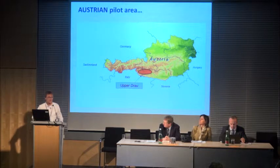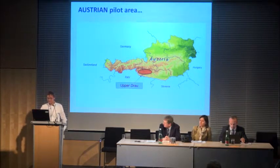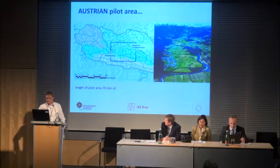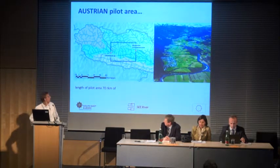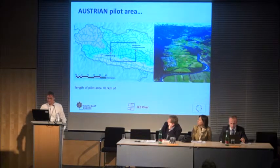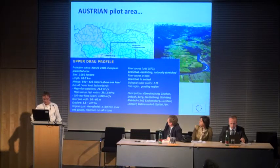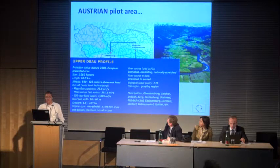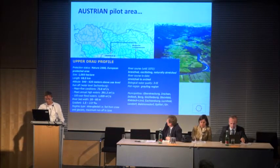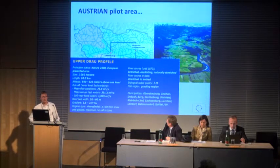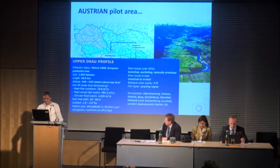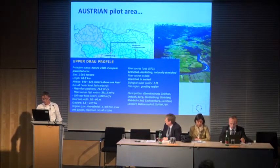It's located in the south of Austria. The Drau flows from west to east across the provinces of East Tyrol and Carinthia. The pilot area goes from Oberdrauburg at the border from East Tyrol to Carinthia and is about 70 kilometers long. Some key facts: we have 2,100 square kilometers and a 100-year flood of about 1,029 cubic meters per second.